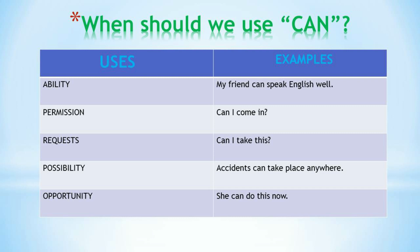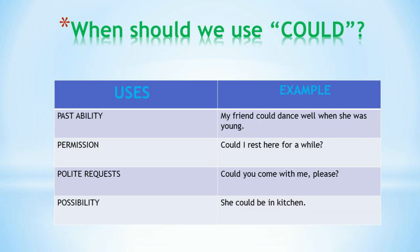For request: 'Can I take this?' For possibility: 'Accidents can take place anywhere' — this is not certain but expresses a possibility. For opportunity: 'She can do this now.' So 'can' is used to express ability, permission, request, possibility, and opportunity.